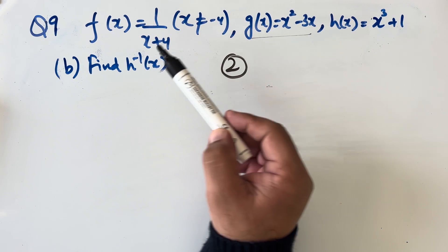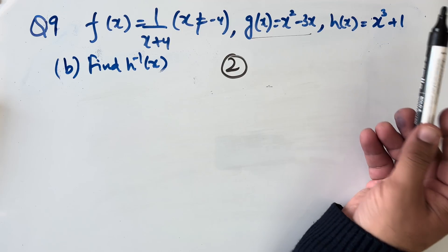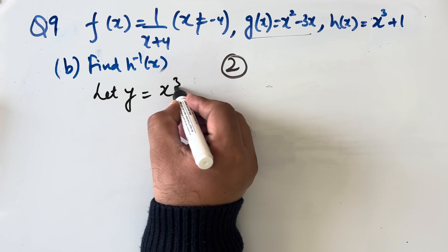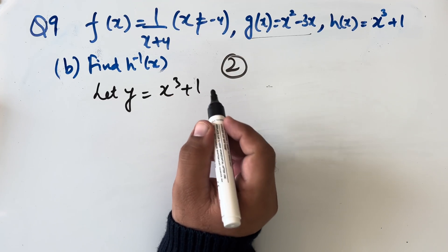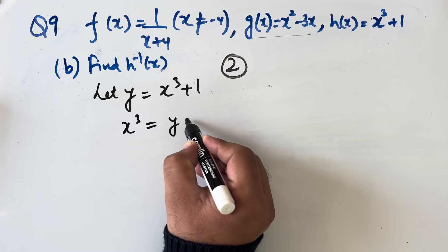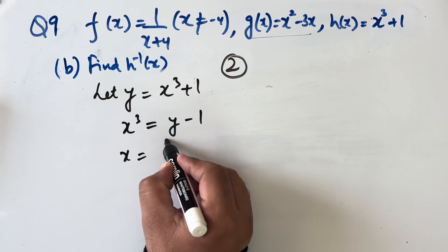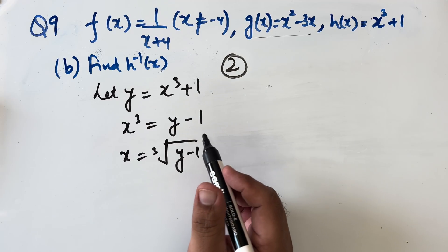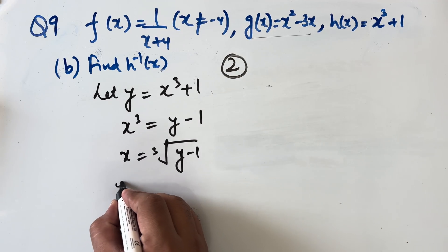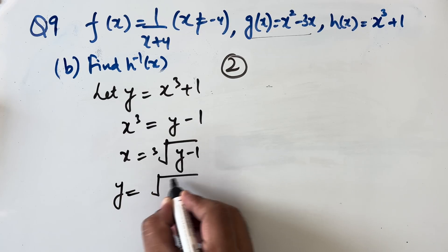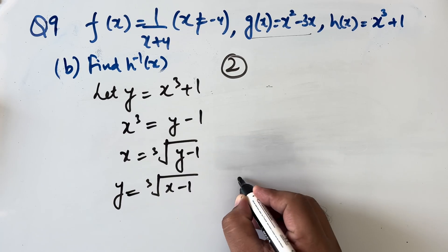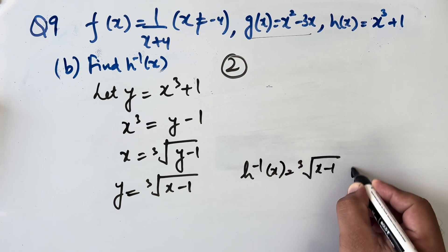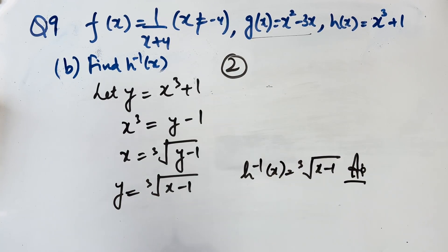Question 9b: find h⁻¹(x). Since h(x) = x³ + 1, let y = x³ + 1. Making x the subject: x³ = y − 1, so x = ∛(y − 1). Interchanging x and y: h⁻¹(x) = ∛(x − 1). This is our answer.